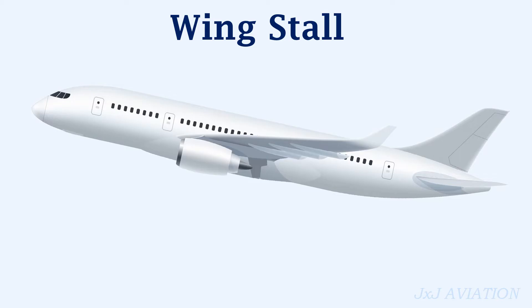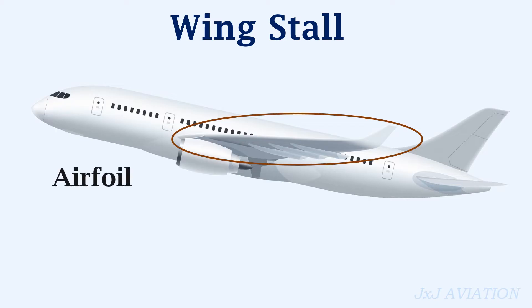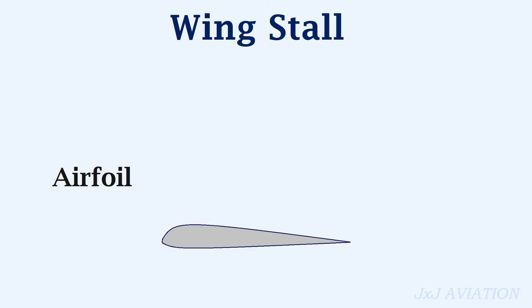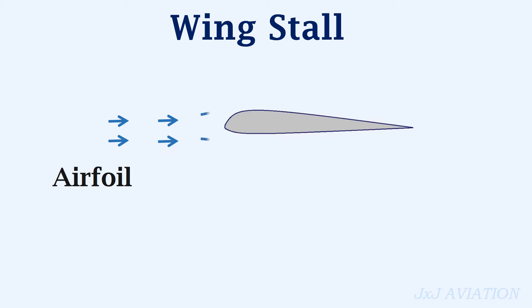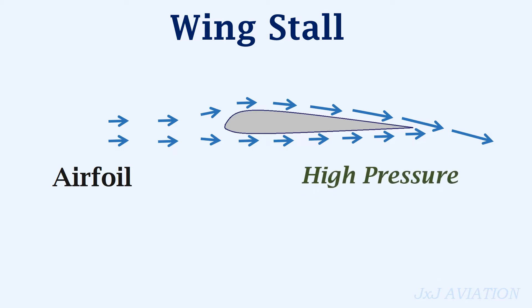To understand wing stall, we need to take a closer look at the cross-sectional shape of the wing, which is the airfoil. A typical cambered wing airfoil would look like this. On the top surface of the airfoil, the air moves faster than the bottom surface. This causes high pressure to be created at the bottom, and low pressure to be created on the top, which produces the lift force on the airfoil and the wing.